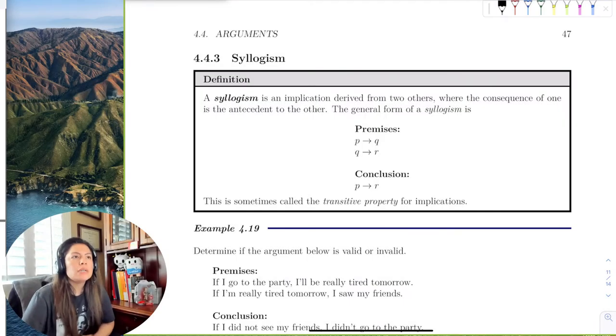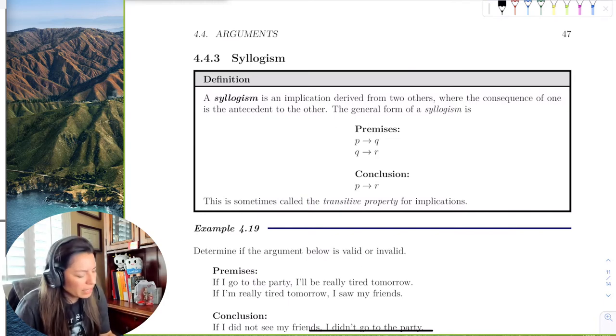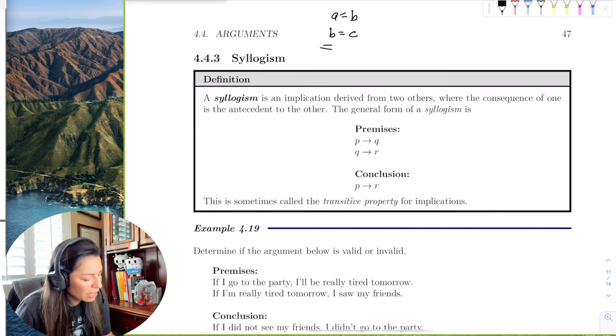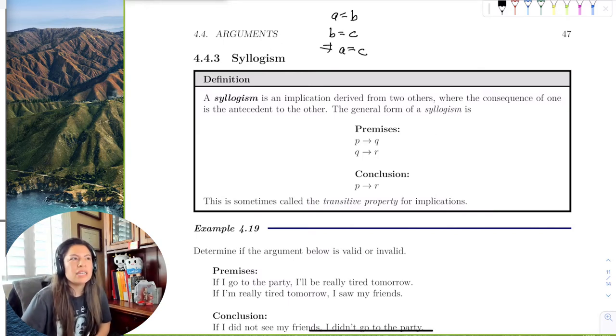So the next piece here is syllogism, and this uses the implications in a way that we can be reminded of the transitive property. When A equals B and B equals C, this implies that A is equal to C. That's what syllogism is in arguments, and that's where it's derived from.